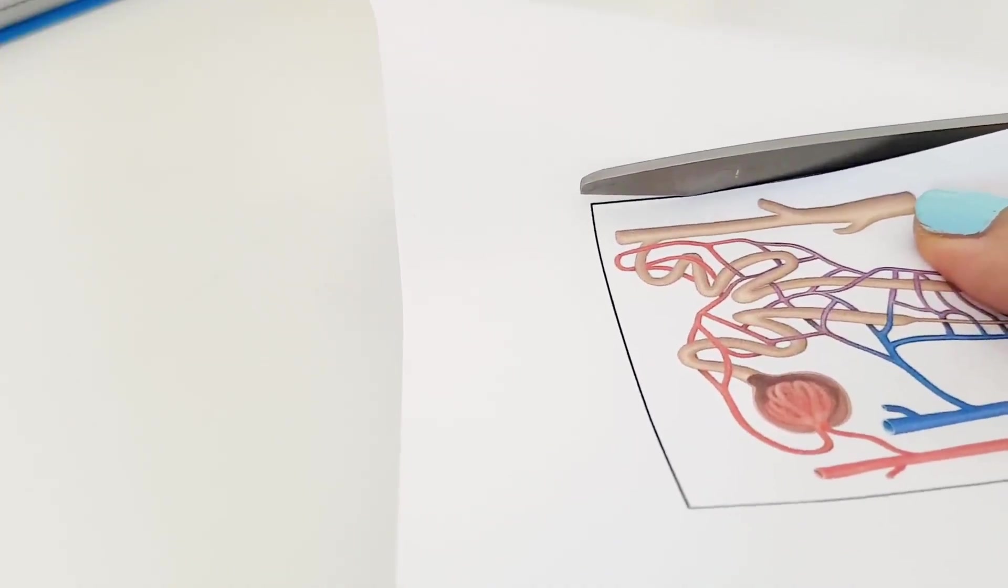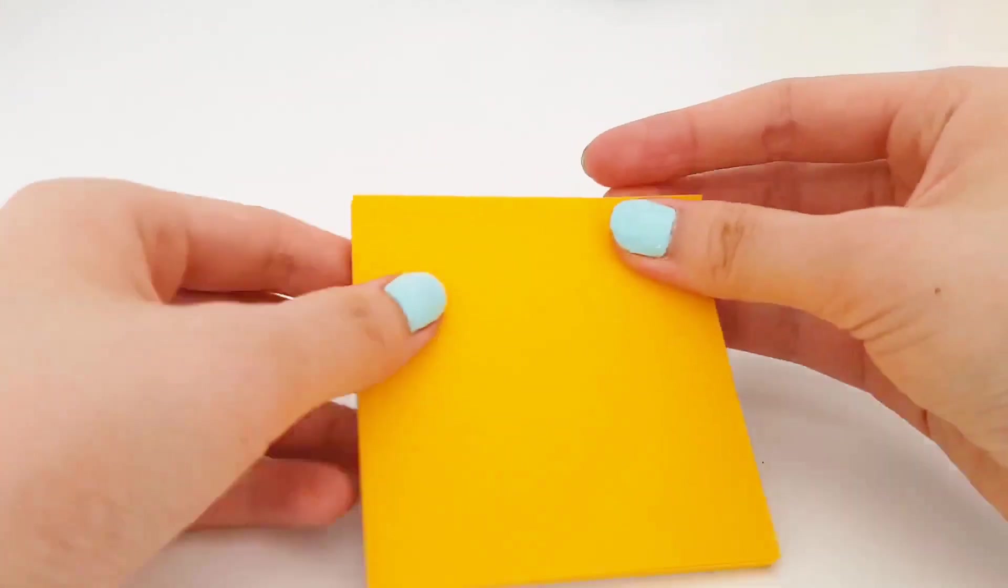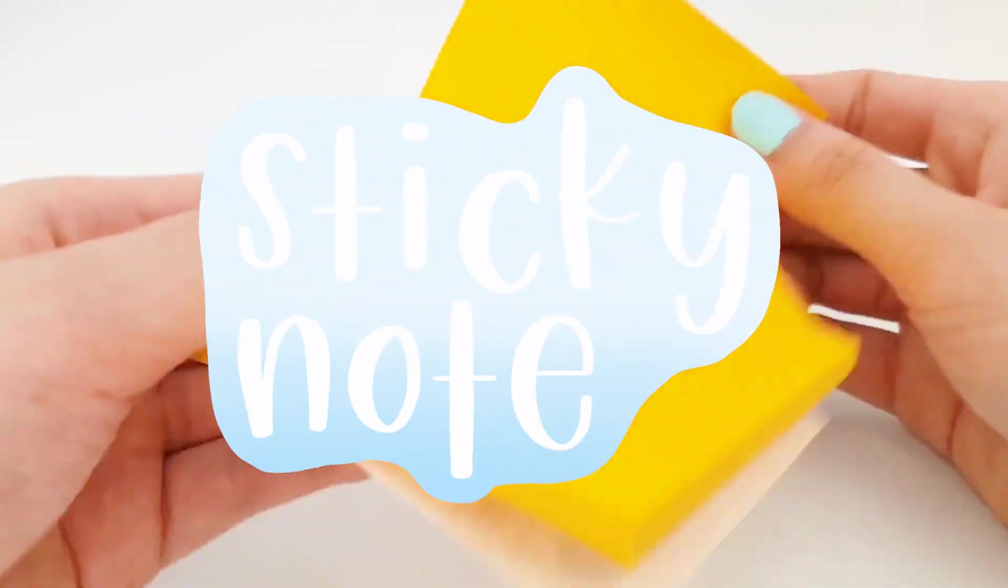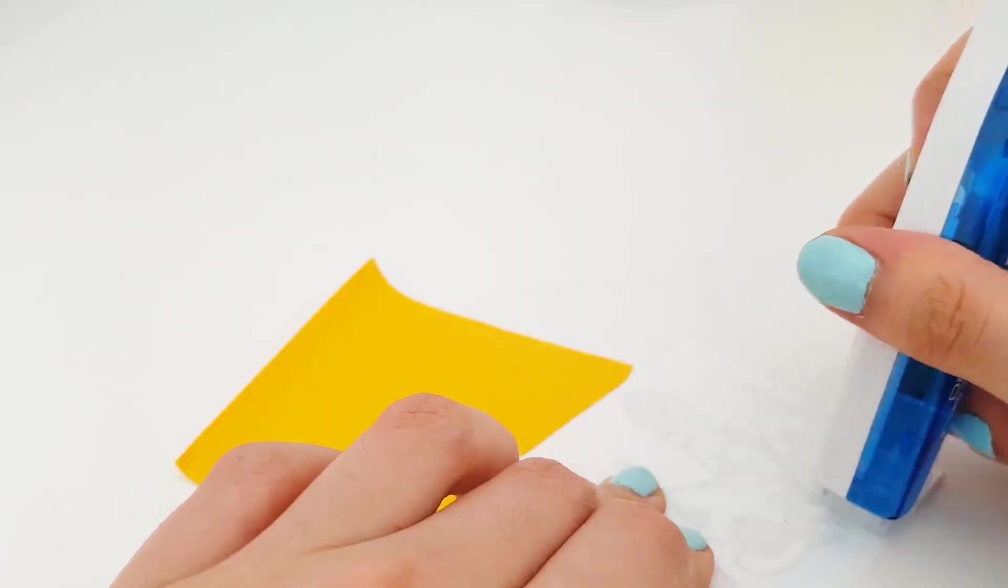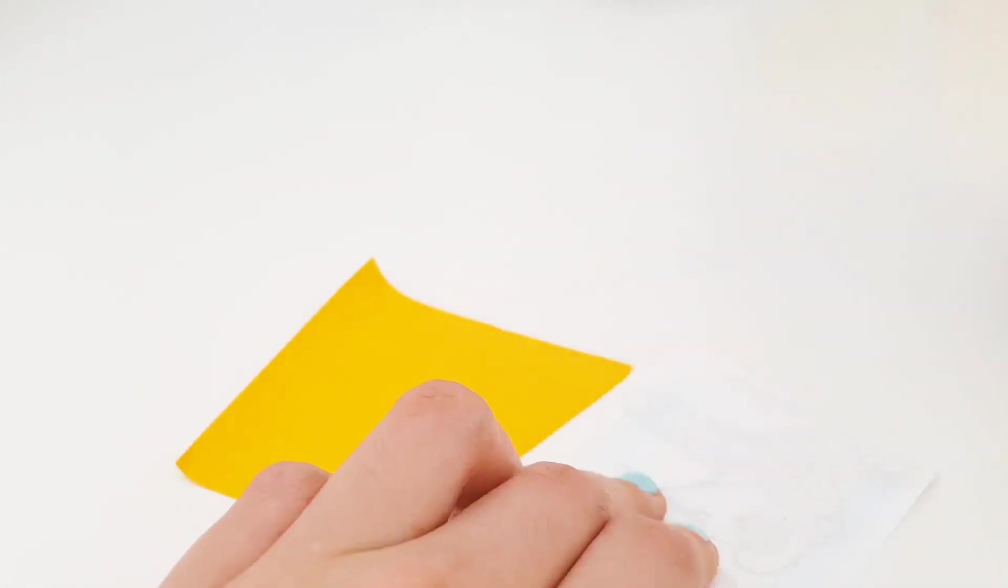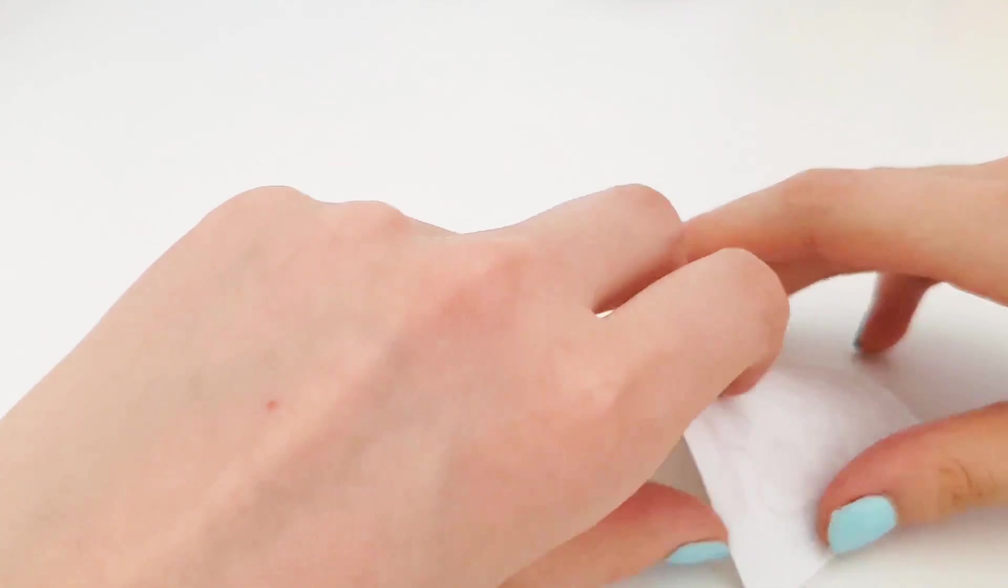And once you've cut it out, you're going to take a sticky note, and then some glue, and then you can stick it on. And wow, you have this perfect little image for your diagrams.